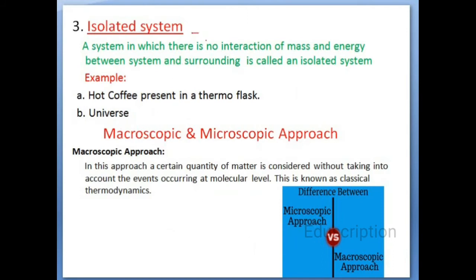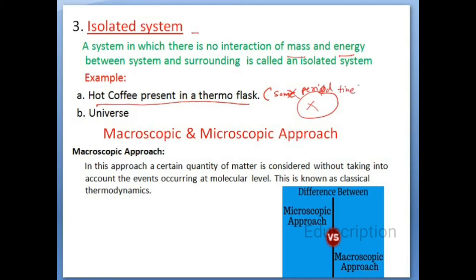The third one is the isolated system. A system in which there is no interaction of mass and energy between the system and the surrounding is called an isolated system. A thermos flask is one example — it will work as an isolated system for some period of time, because the temperature will automatically rise eventually. In some books, the universe is also cited as an example of an isolated system, since nothing is outside it. These are both virtual examples of an isolated system.